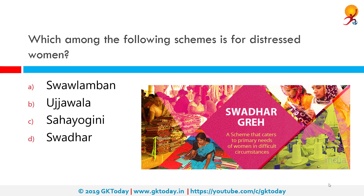Which among the following schemes is for distressed women? The correct answer is Swadhar. The Swadhar scheme was launched by the Union Ministry of Women and Child Development in 2002 for the rehabilitation of women in difficult circumstances. It provides shelter, food, clothing, etc., to marginalized women. Beneficiaries include widows deserted by family and relatives, women prisoners released from jail without family support, survivors of natural disasters, victims of terrorism, etc. Usually the implementing agencies are NGOs.